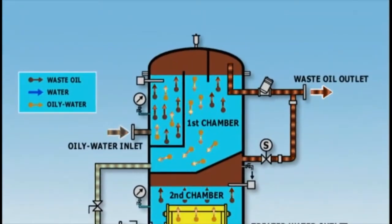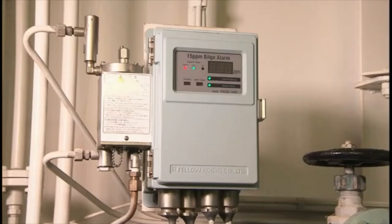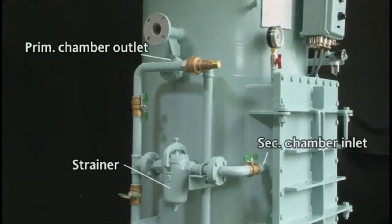Oil separated in the primary and secondary chambers collects in the upper part of the respective chambers. After the oil level of each chamber has been determined by a capacitive sensing detector, a solenoid valve is opened and oil is discharged automatically using the chamber's internal pressure. If your bilge separator is equipped with a 15 ppm bilge alarm, check the alarm in accordance with the operating manual to confirm that it works properly. After finishing bilge separator operation, clean the strainer installed in the connecting pipe between the primary and secondary chambers, to prevent the coalescer from becoming clogged with refuse and sludge.